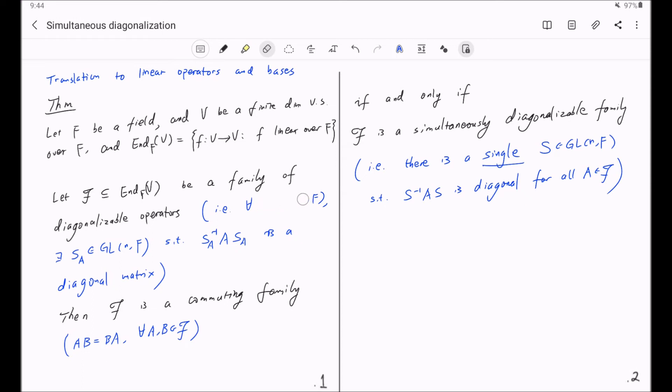Namely, for each F in script F, there exists a basis, say epsilon 1 through epsilon n, where n is the dimension of V, such that each basis vector is an eigenvector of F. So F applied to epsilon i is equal to some lambda i times epsilon sub i, for i from 1 to n.